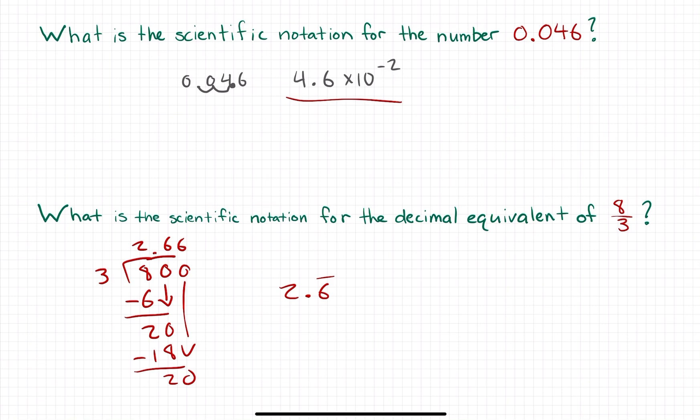The interesting thing about this problem is that we're already dealing with a number between 1 and 10. Now it's not super useful to write a number that's already between 1 and 10 in scientific notation, but if you had to and you don't move the decimal at all, then your exponent is just going to be 0.